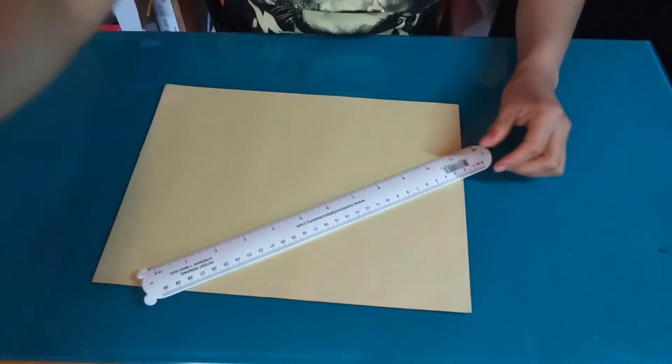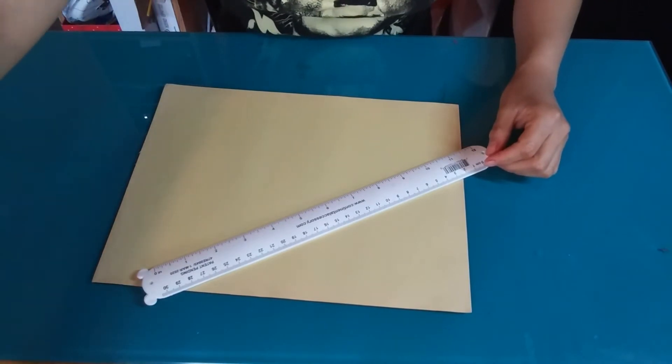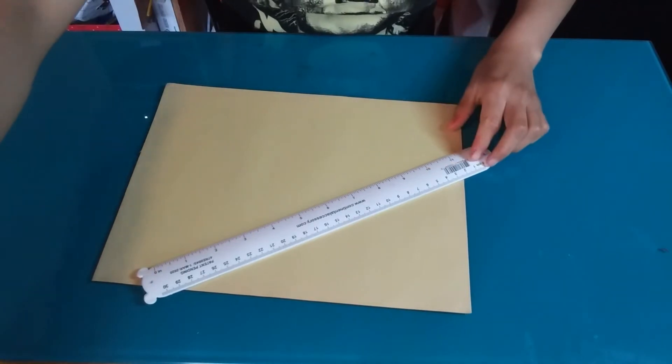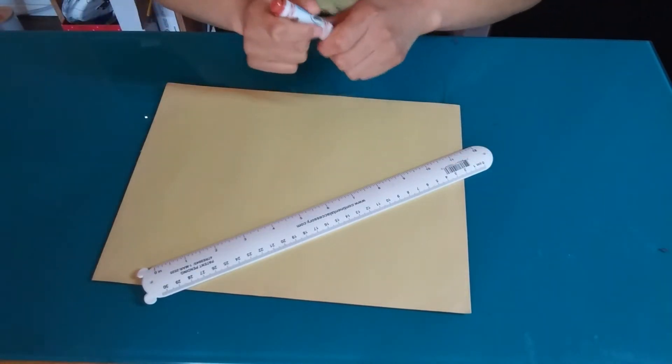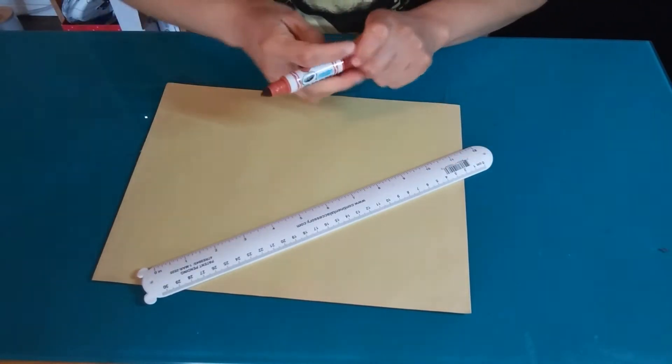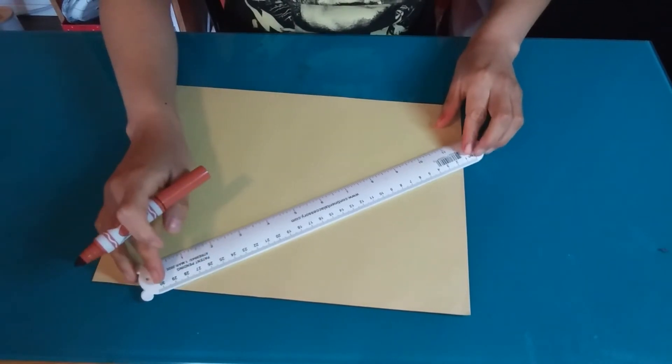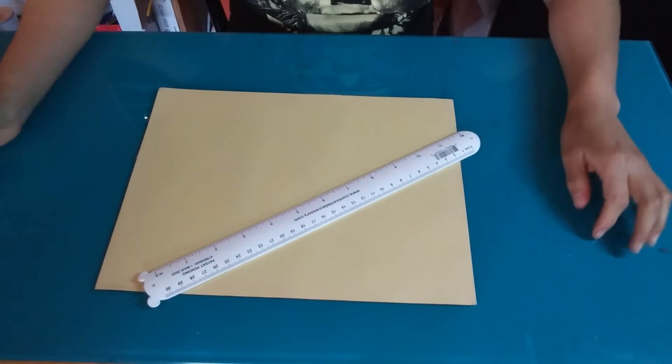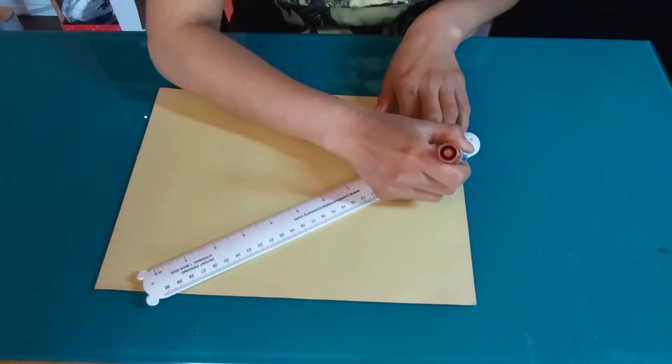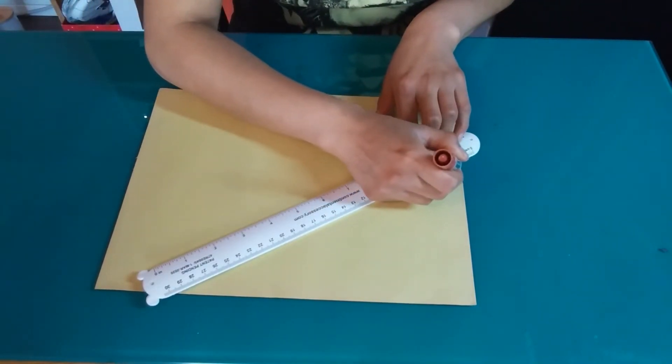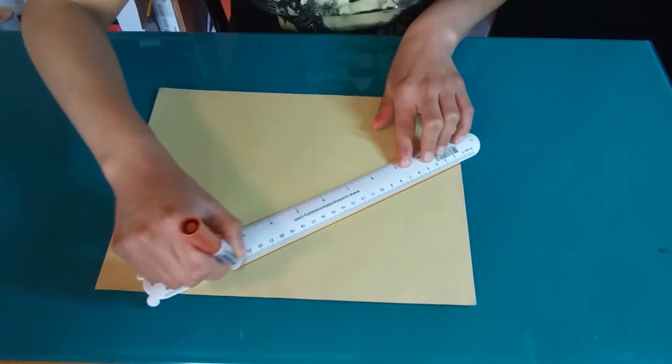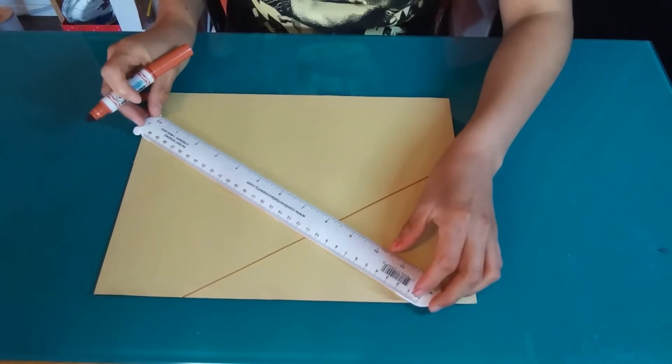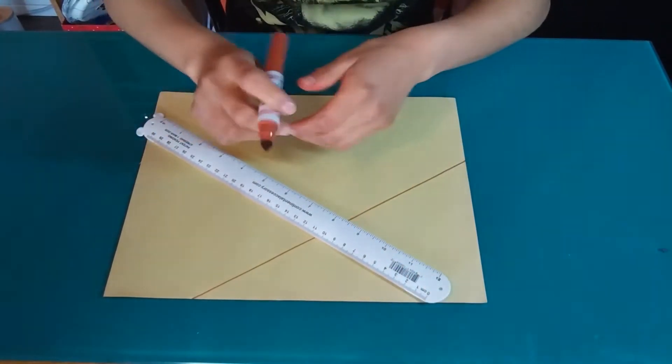So grab a marker, a dark colored marker that you want. You can use black, brown, a dark color. I'm going to use brown. And just put your ruler wherever you want on your paper. Hold the ruler and make a straight line. And just keep making as many straight lines as you want.